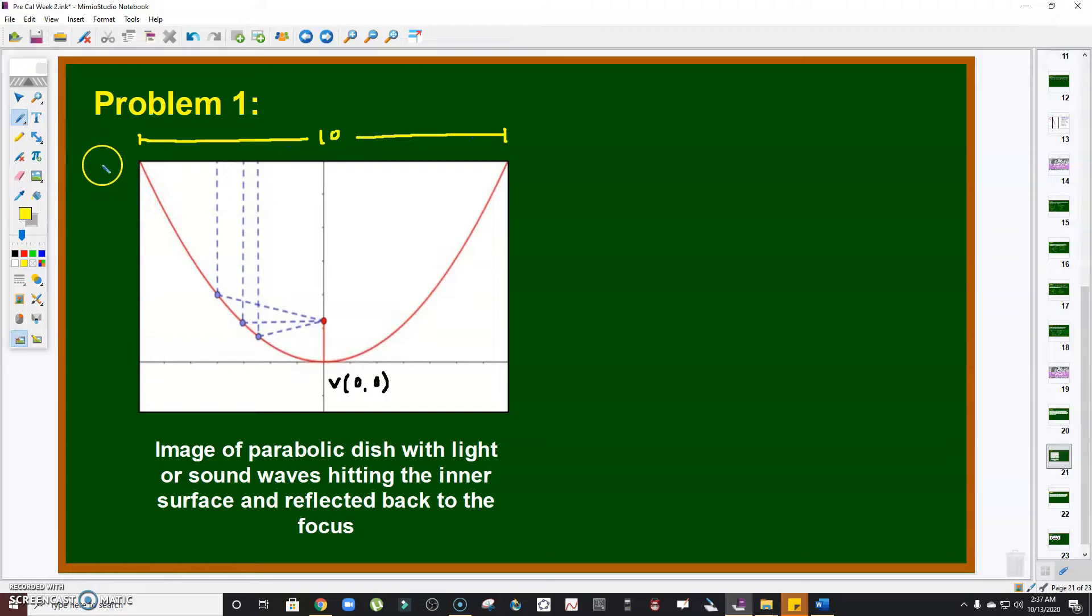Now, the mirror is 10 feet across, so this point here has coordinates of (5, 4). Do you agree? This has a coordinate of (5, 4).